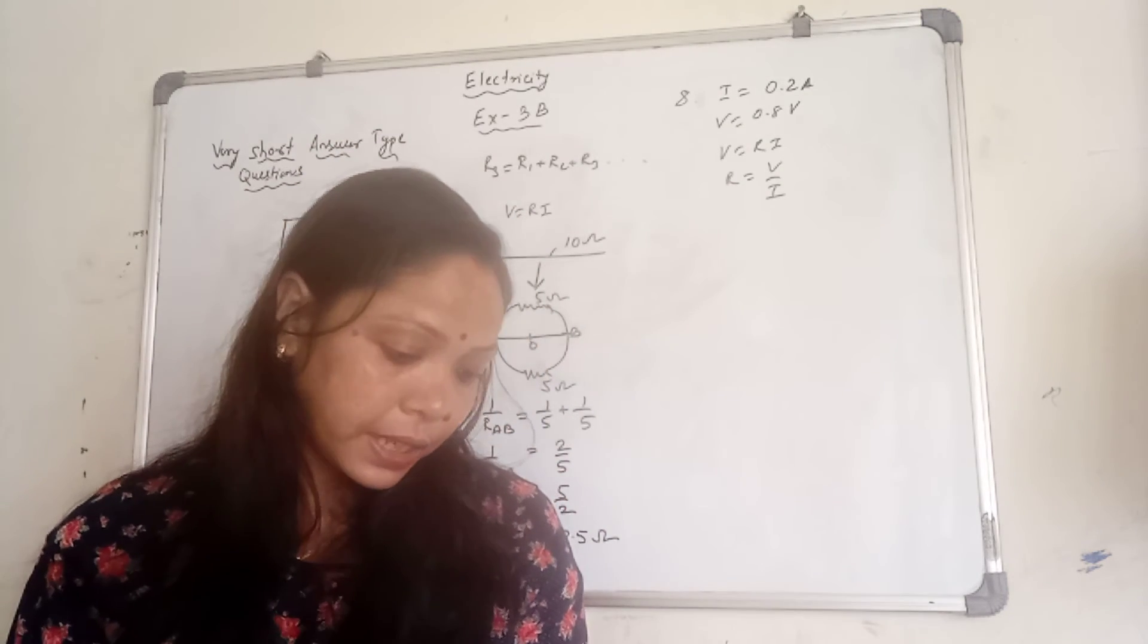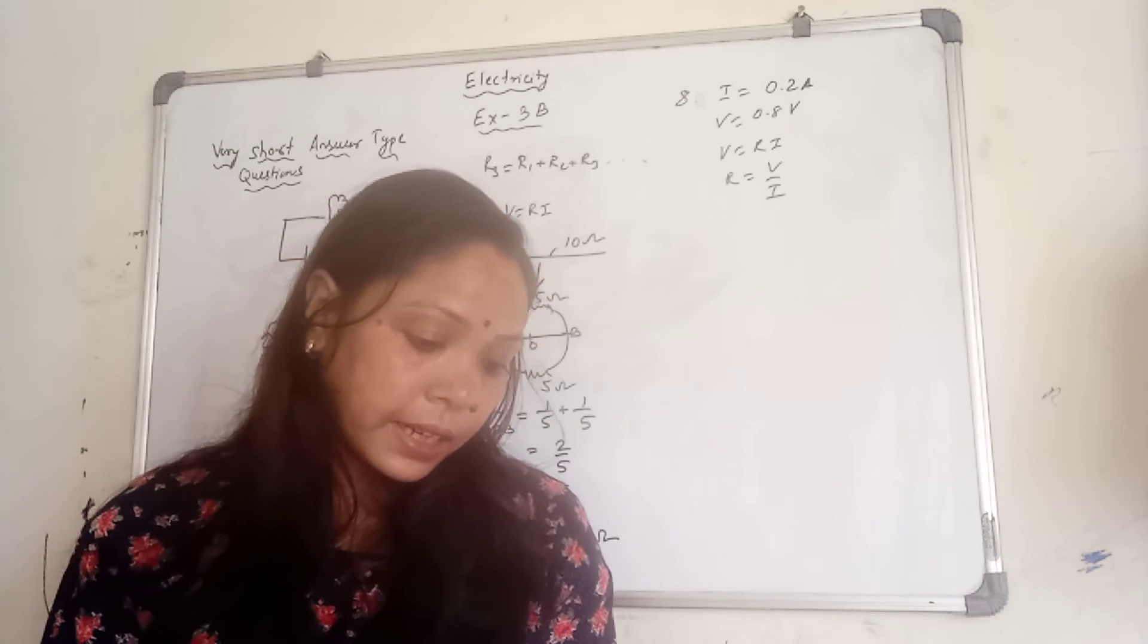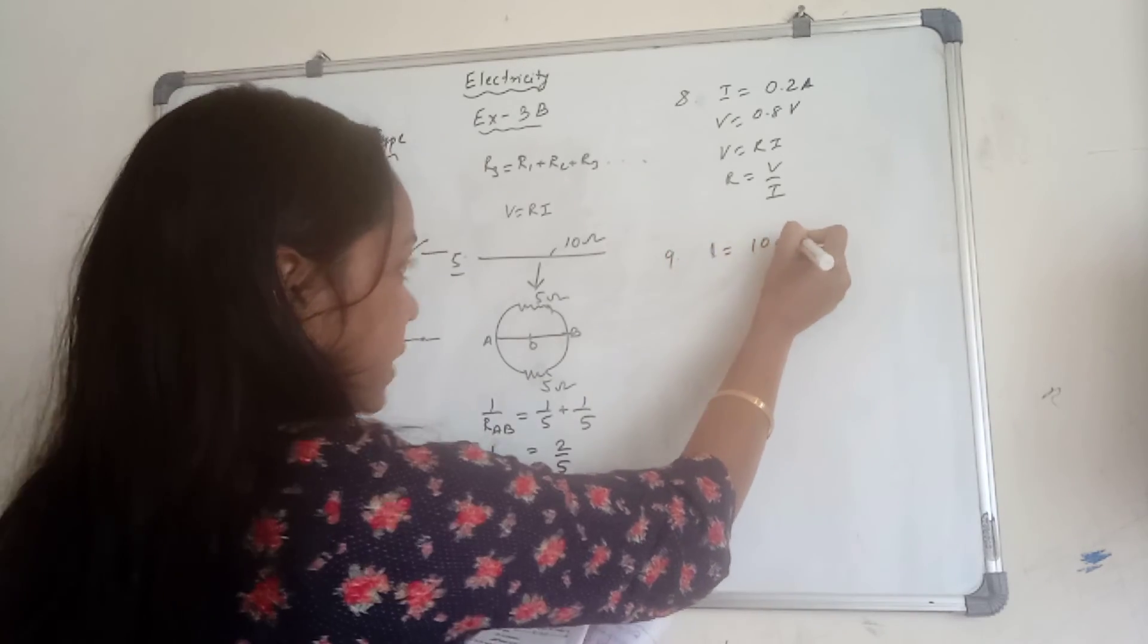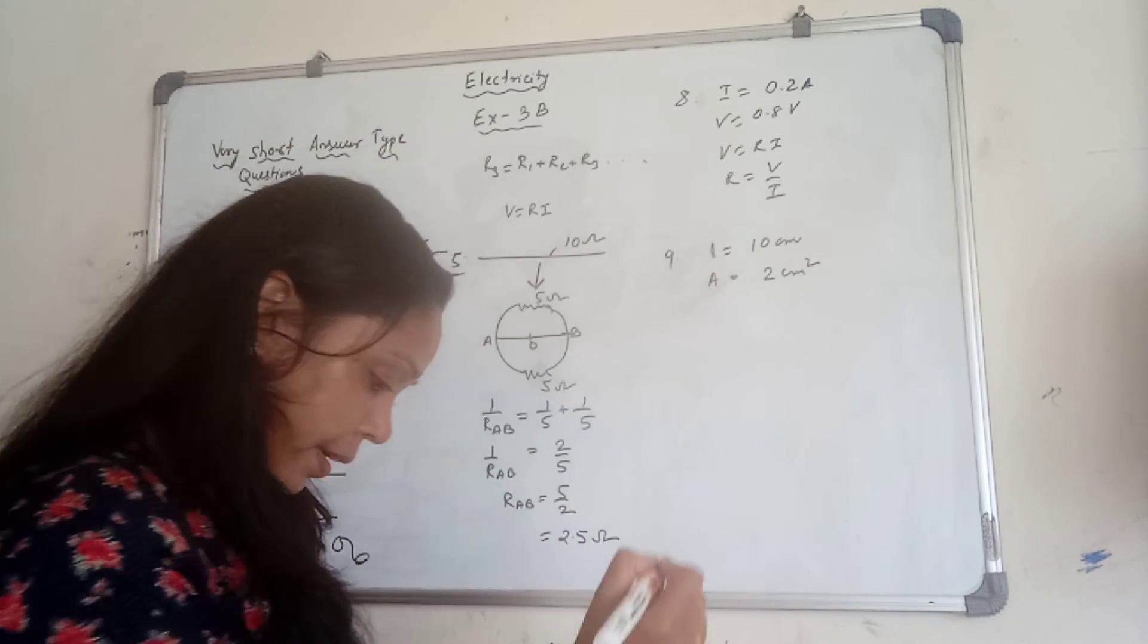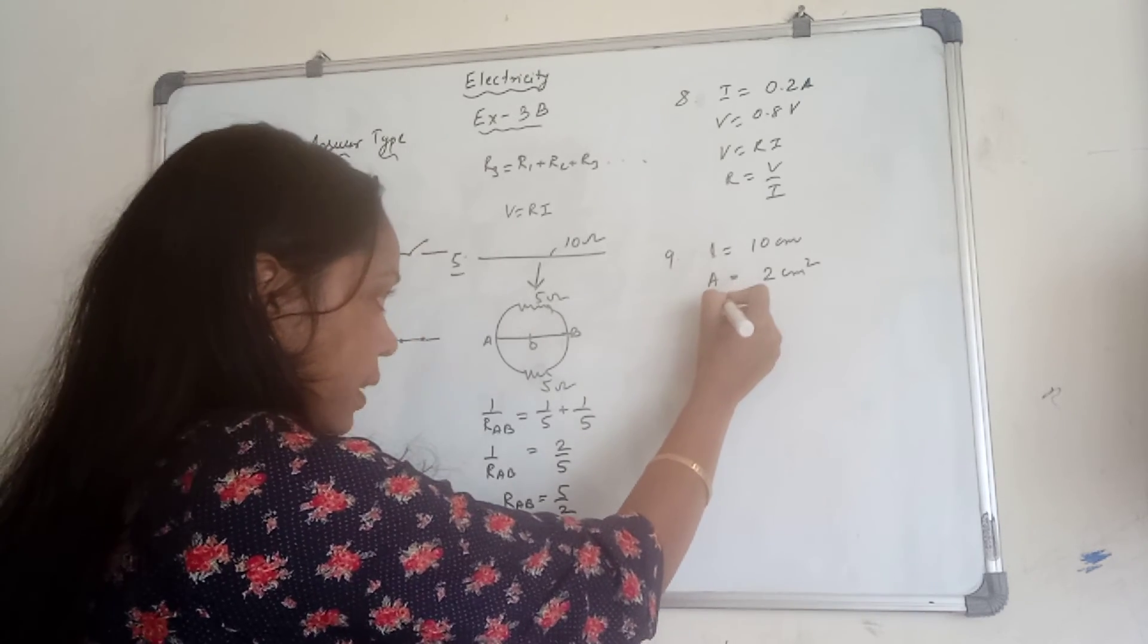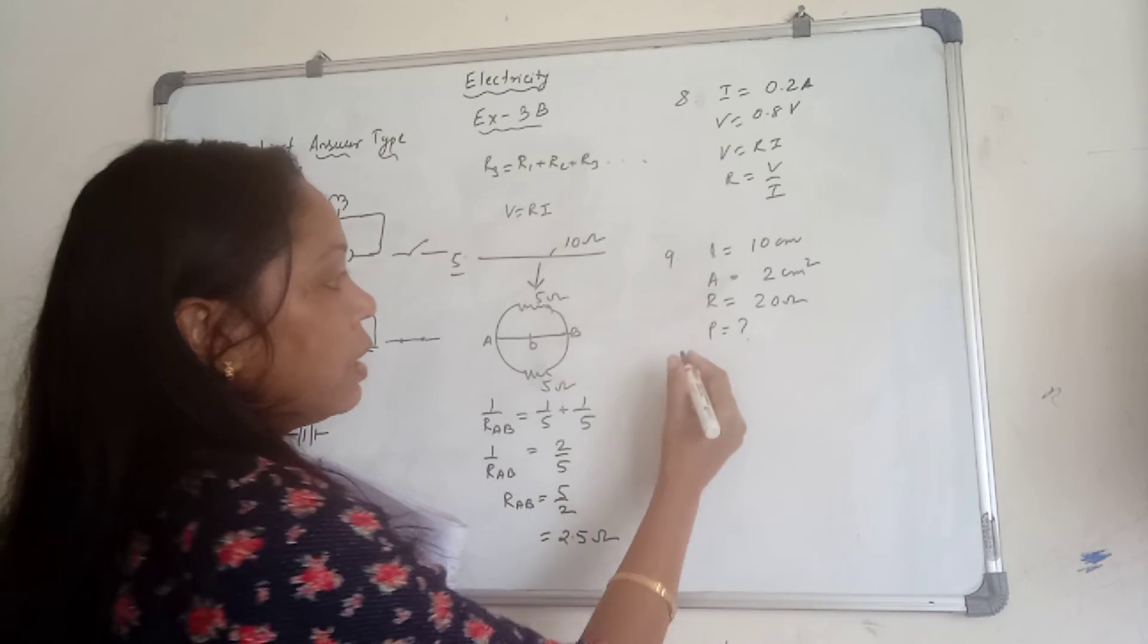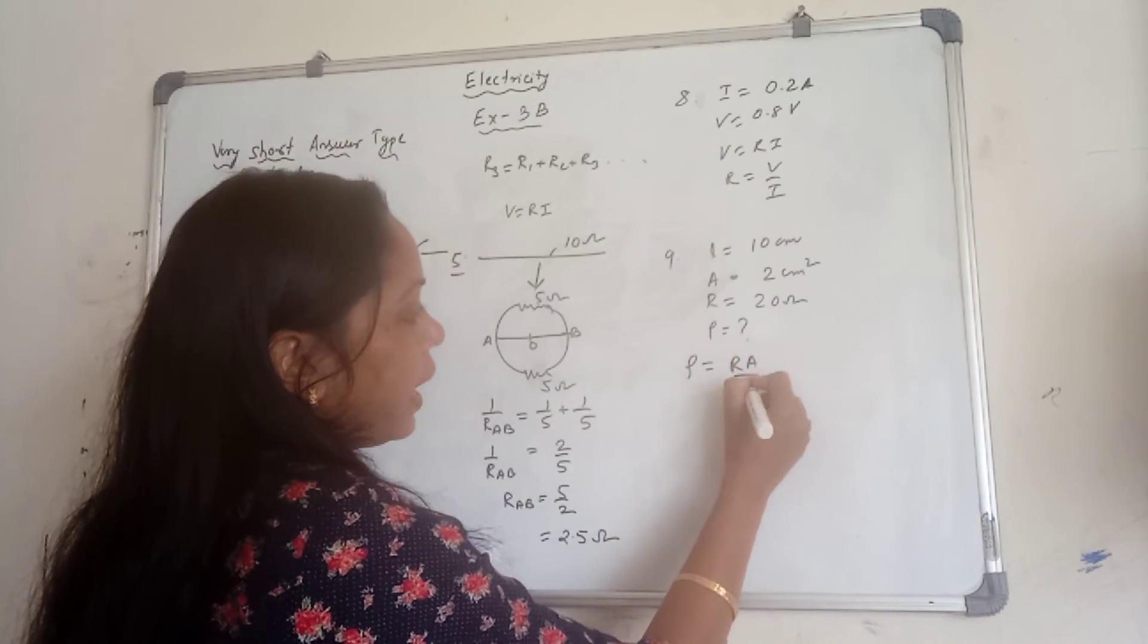The last question of this section. A cylinder of material 10 cm long has a cross-section of 2 cm square. Here is given length is equal to L is equal to 10 cm. Cross-sectional area A is given as 2 cm square. If the resistance along the length be 20 Ohm, so R is given as 20 Ohm. Find the resistivity.